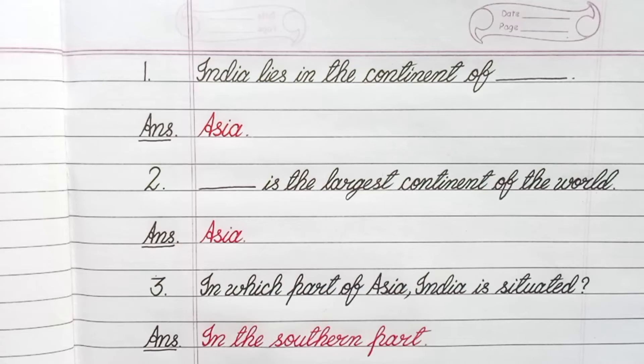Question number 3: In which part of Asia is India situated? Answer: In the southern part.